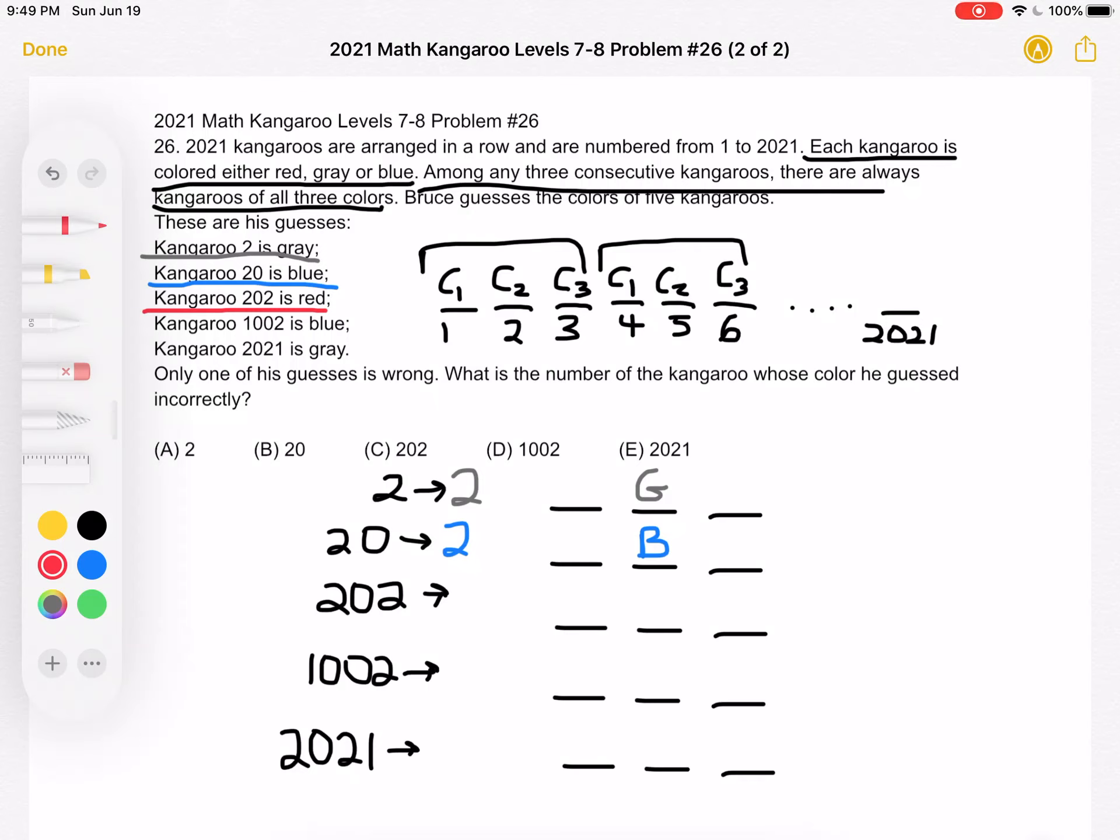1002 is divisible by 3 because 1 plus 0 plus 0 plus 2 is 3. So we have a remainder of 0. That guess is telling us that blue is color 3. And then we have kangaroo 2021 is gray. 2021 is not divisible by 3. But 2022 is because 2 plus 0 plus 2 plus 2 is 6 and 6 is divisible by 3. So that means that we would have a remainder of 2. That means gray is color 2.